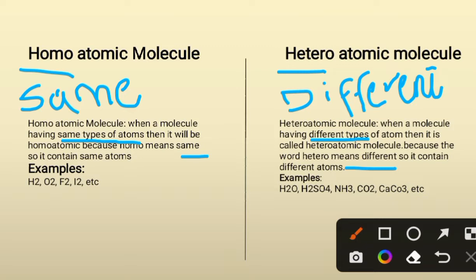Examples of homoatomic molecules include H₂, O₂, F₂, and I₂. H₂ is made up of two hydrogen atoms which are the same, O₂ of two oxygen atoms which are also the same, F₂ of two fluorine atoms, and I₂ of two iodine atoms — all made up of the same type of atom, so they are homoatomic molecules.